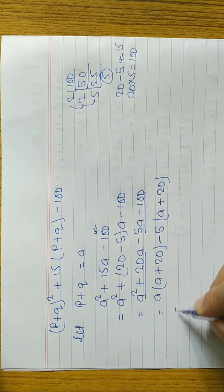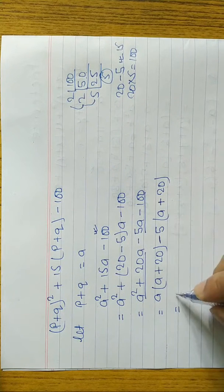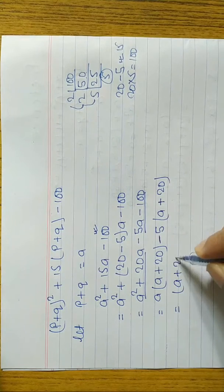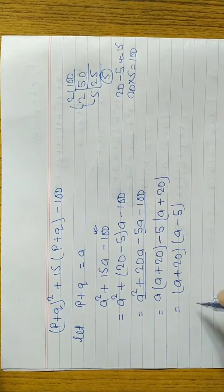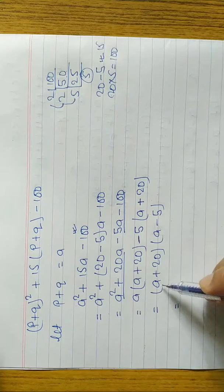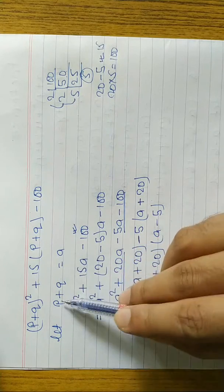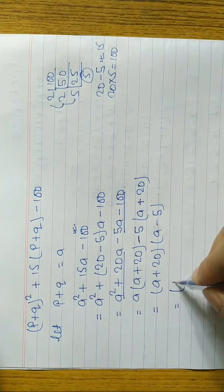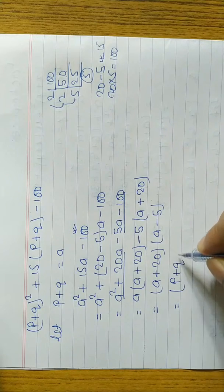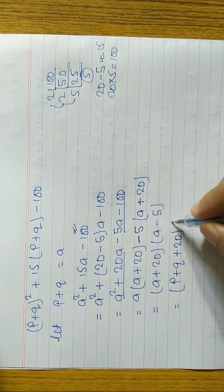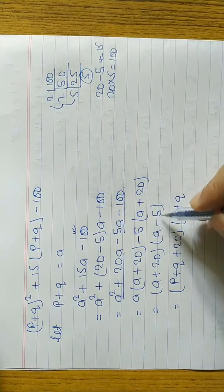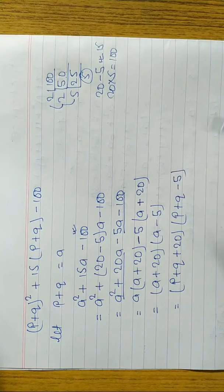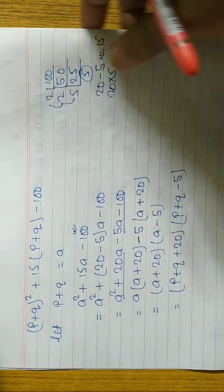We take (a + 20) common and remaining is (a - 5). Now putting back the value of a = p + q: the answer is (p + q + 20)(p + q - 5).